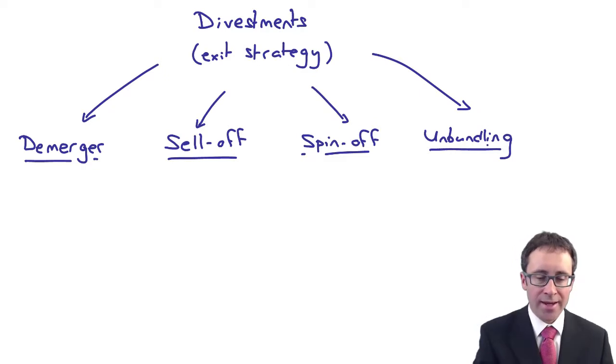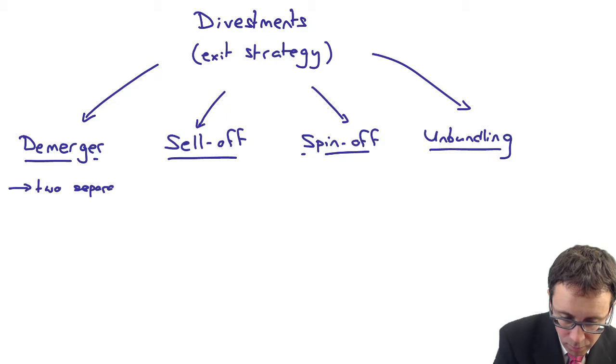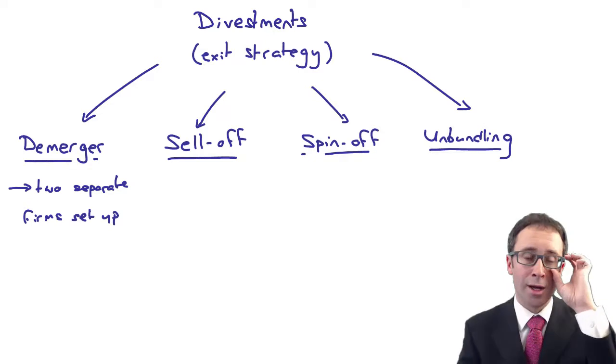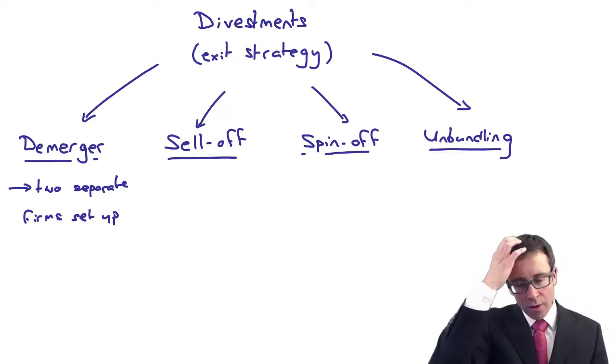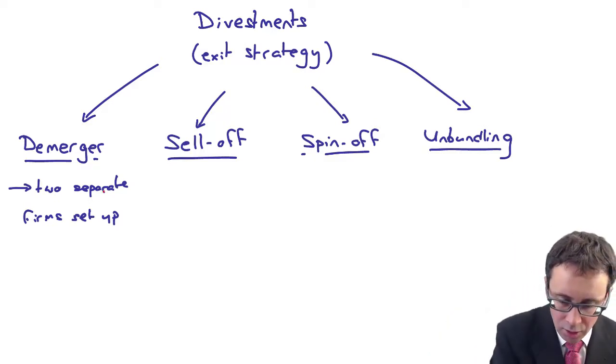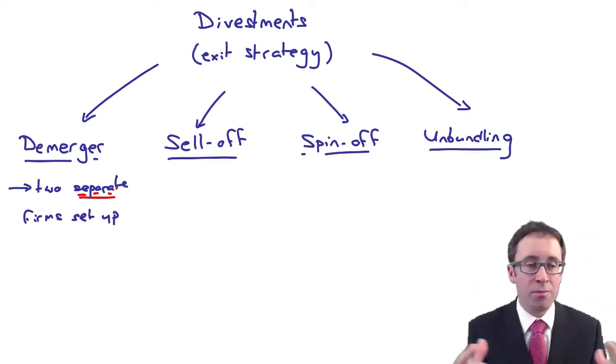Let's think about a demerger. With a demerger, as a result of the demerger you have two separate firms that are then set up. The business has got so big, you want to focus on your core operations. Therefore, you take your large conglomerate and split it out into two separate businesses, two separate new businesses effectively.